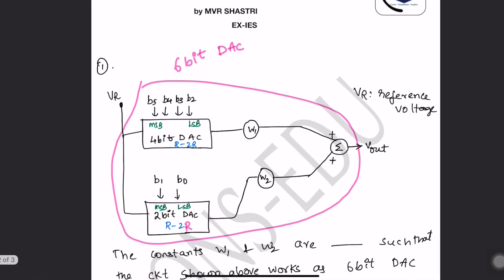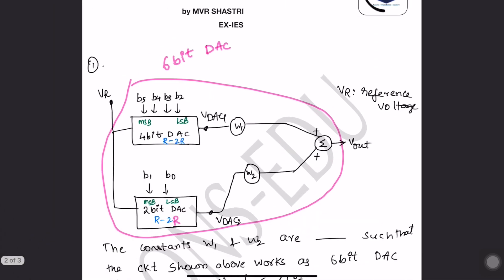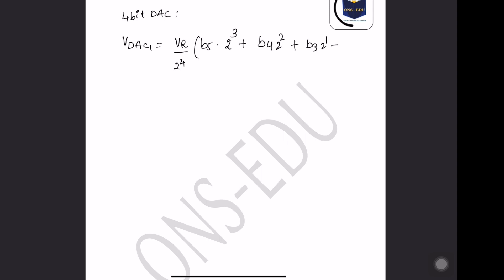So now let us calculate. First let us take the 4-bit DAC. We know that VDAC1 is equal to VR divided by 2 to the power 4, multiplied by: V5 times 2 to the power 3, plus V4 times 2 squared, plus V3 times 2 to the power 1, plus V2 times 2 to the power 0. These are the inputs.